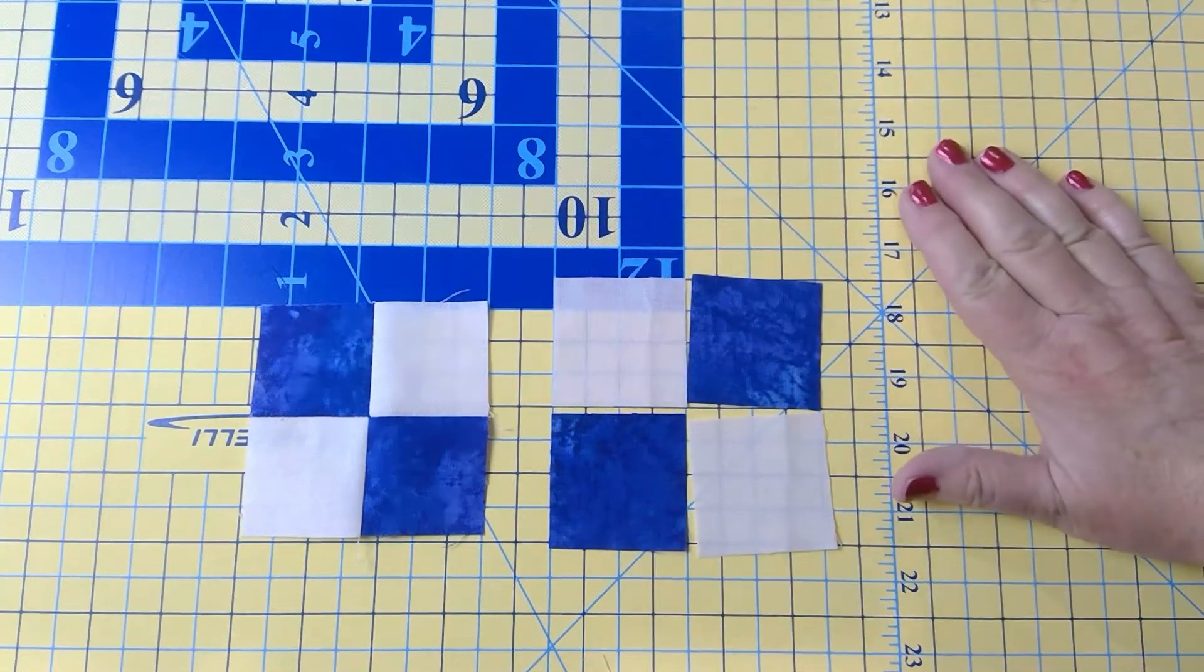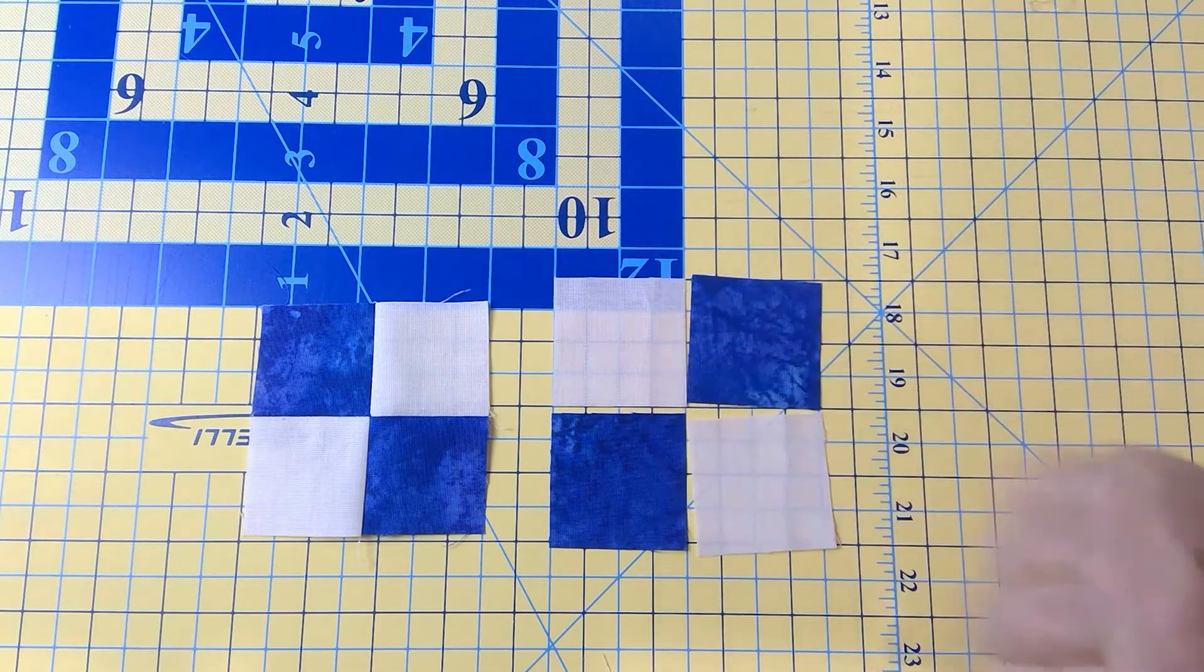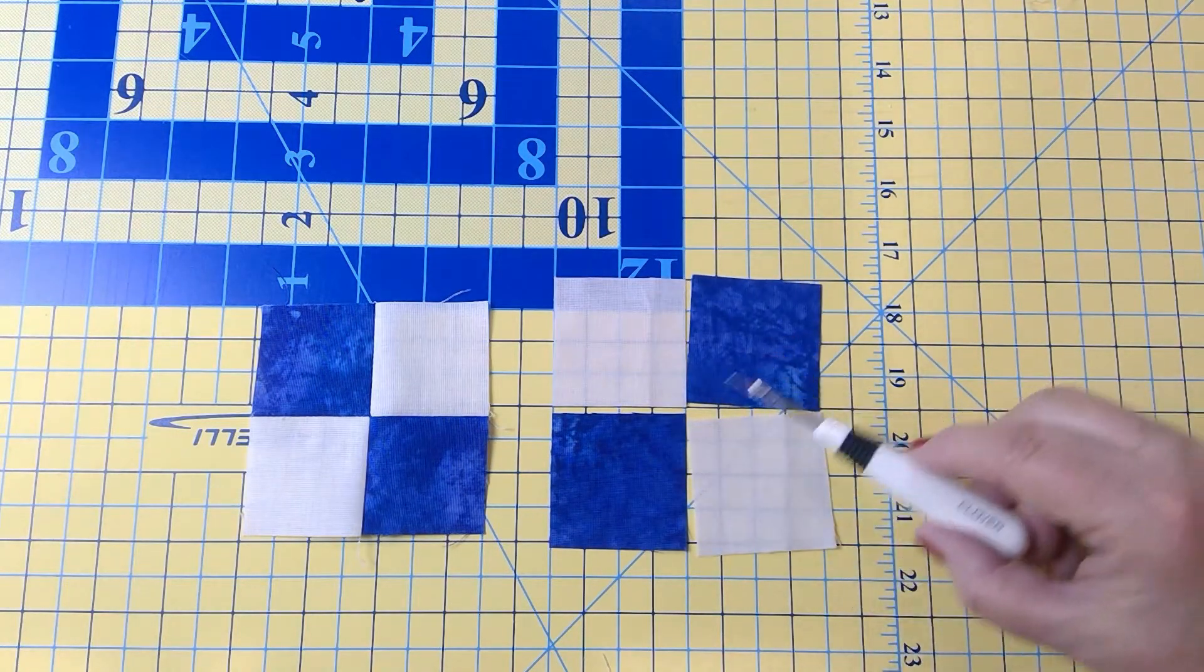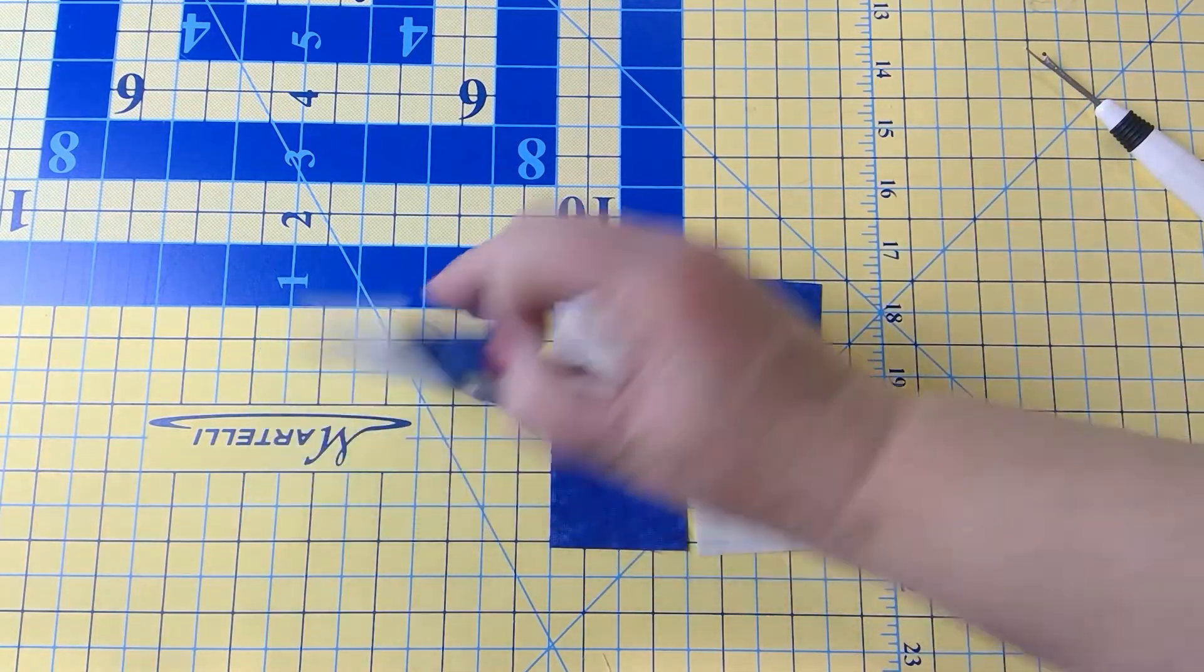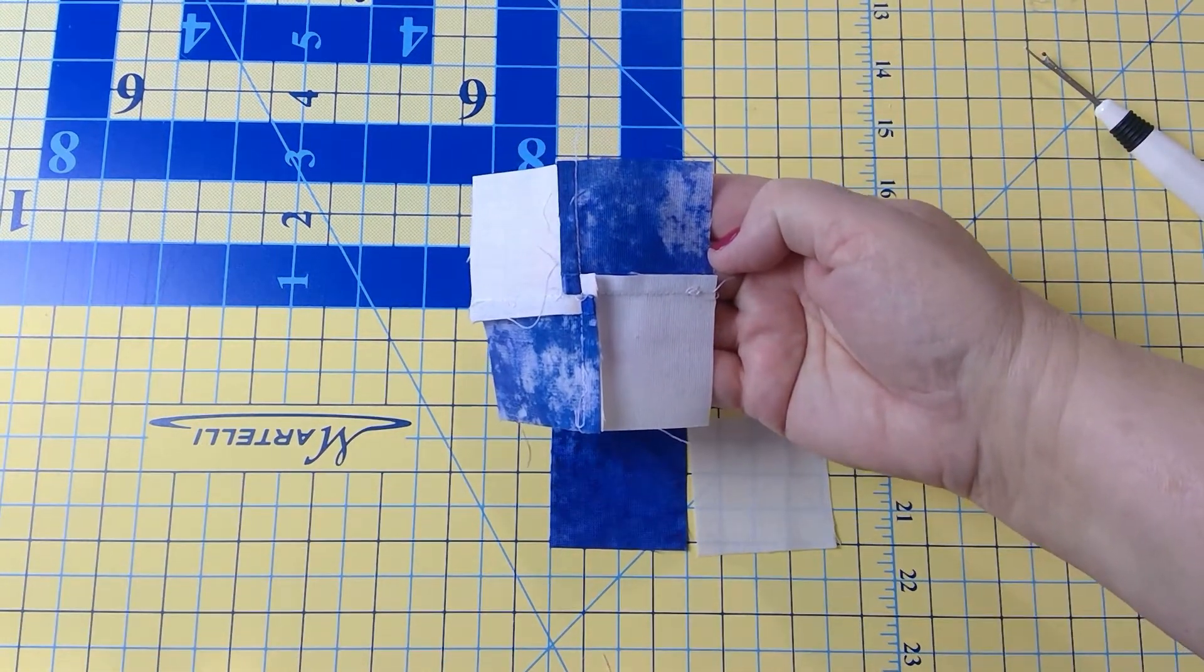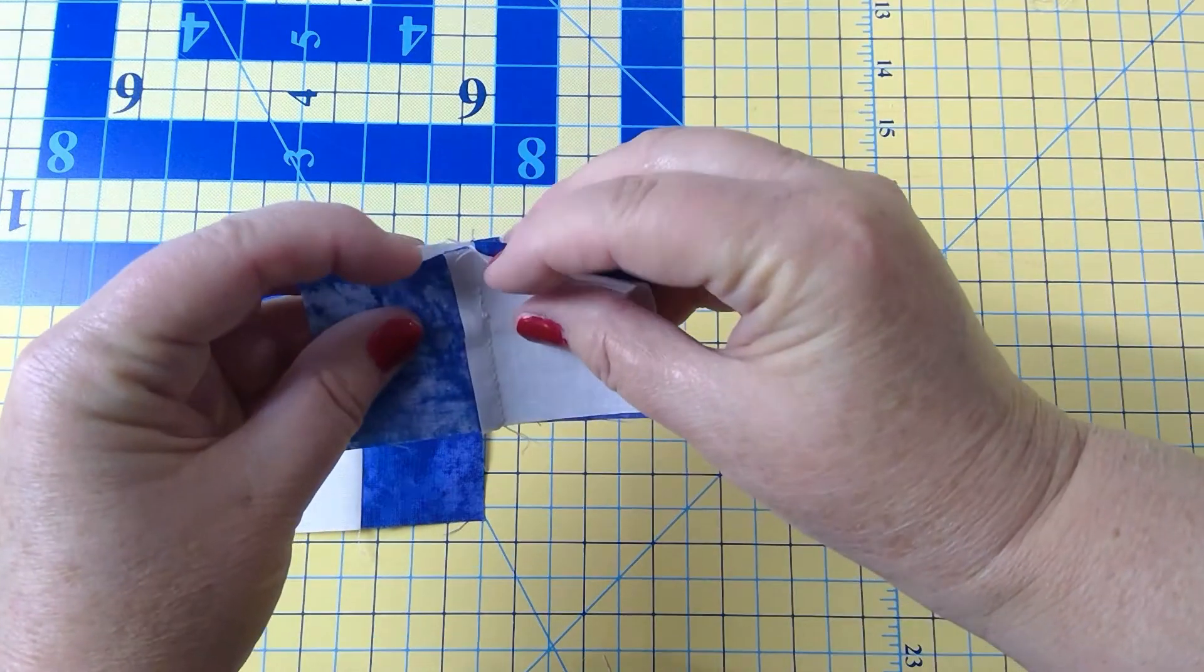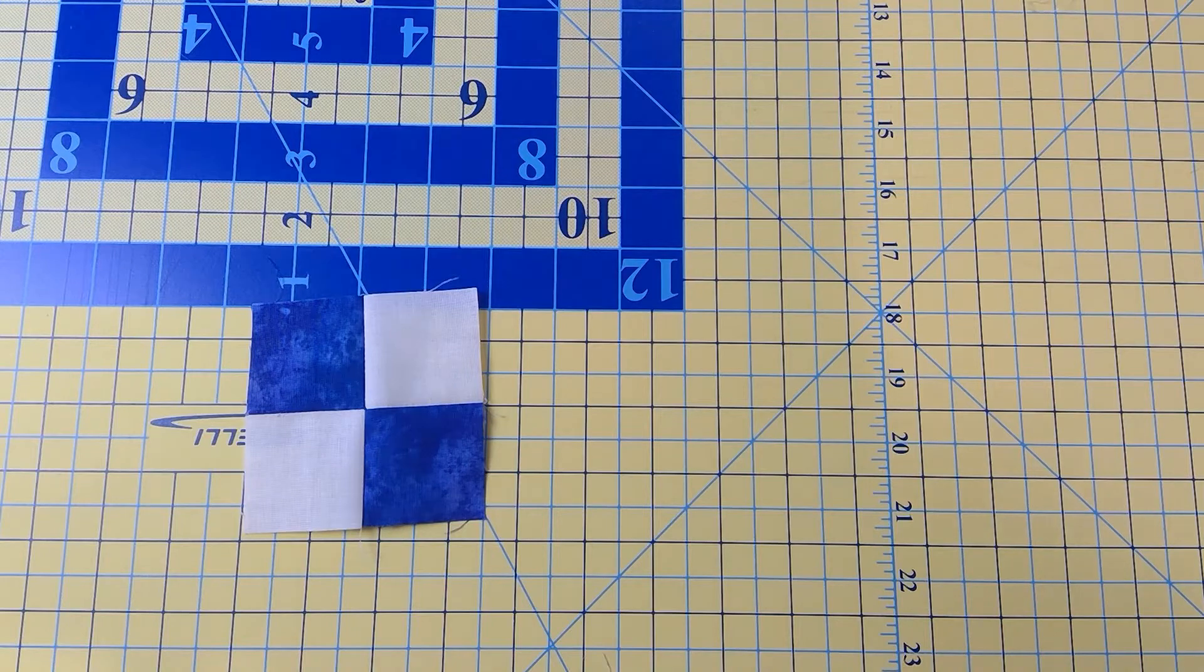Once you join, you're going to press, and then you're making pairs and then you're going to join your pairs to make a four patch. Make sure that your colors, as in mine the medium blue, are opposite each other on the diagonal of your four patch. If you would like, on the back you can spin your seam. Remember, once you press you want to nest your seams. Your four patch will lay nice and flat.